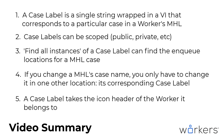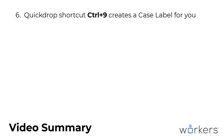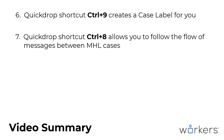A case label has an icon, and this icon takes the header of the worker it belongs to, allowing you to identify which worker a message should be sent to. Quick drop shortcut Ctrl and the number nine key automatically creates a case label for whatever case is currently visible on a worker's main VI's block diagram. And quick drop shortcut Ctrl and the number eight key will jump you to the case that the selected case label on the block diagram corresponds to, helping you easily follow the flow of your messages around your application while you develop.